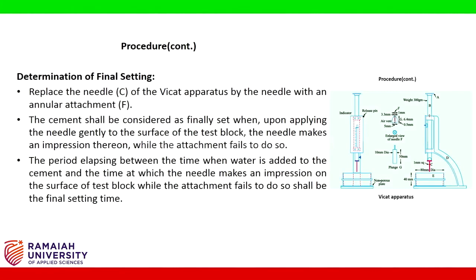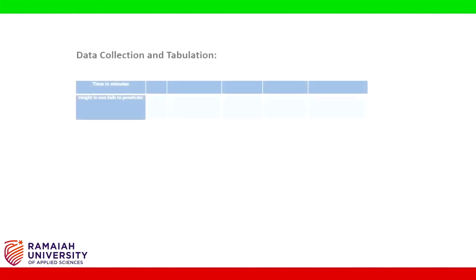Determination of final setting time: Replace needle C of the Vicat apparatus with the needle having an annular attachment F. The cement shall be considered as finally set when, upon applying the needle gently to the surface of the test block, the needle makes an impression thereon while the attachment fails to do so. The period elapsing between when water is added to the cement and that point shall be the final setting time. Data collection and tabulation is as shown in the table.